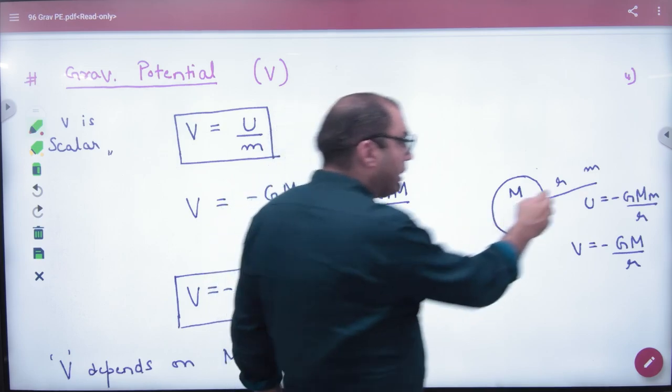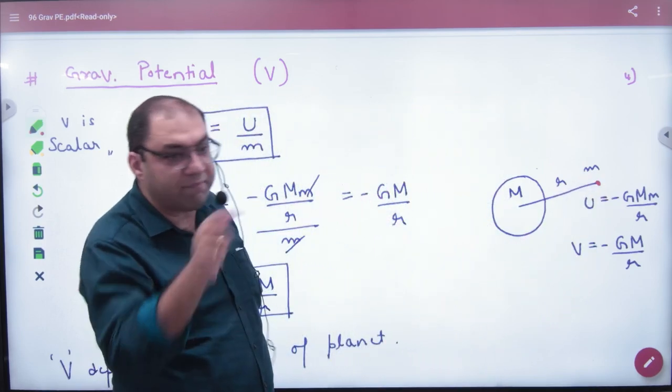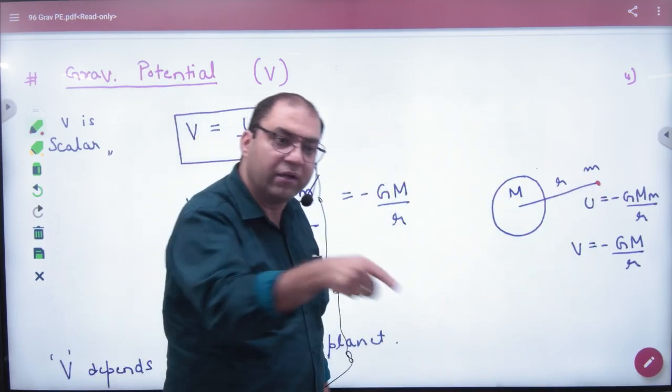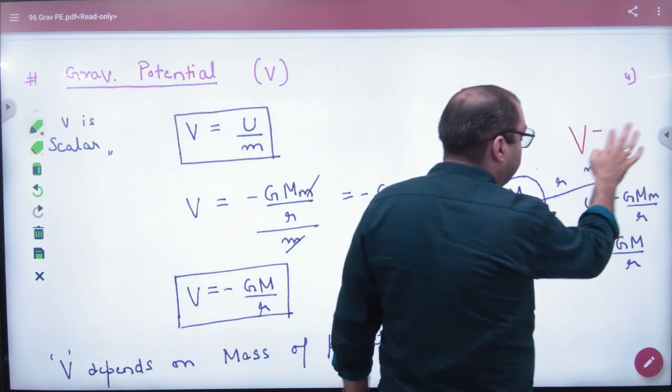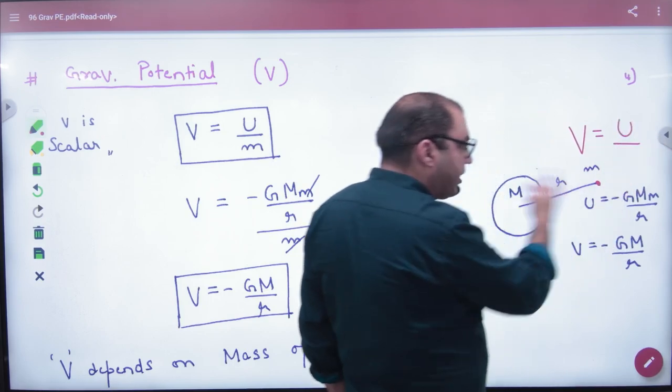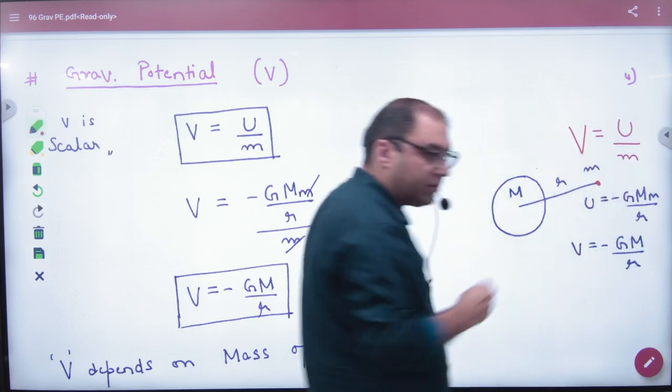Potential, kisi point ka hota hai, jaise intensity hai, kisi point ka hota hai, potential bhi kisi point ka hota hai. To potential ki value V, agar mujhe nikalni hai, to jo bhi system ki potential energy hai, usko is mass se, chhote mass se, divide kar de hai.